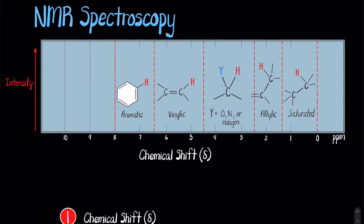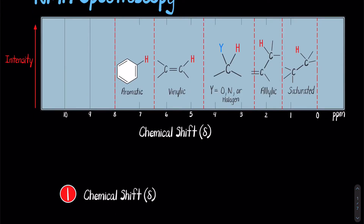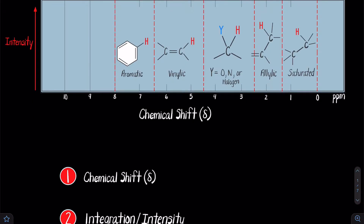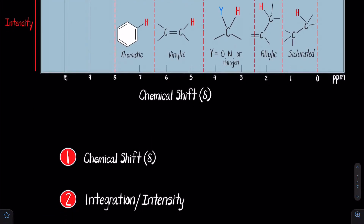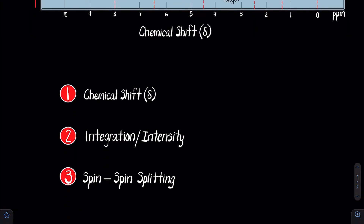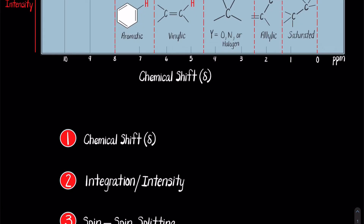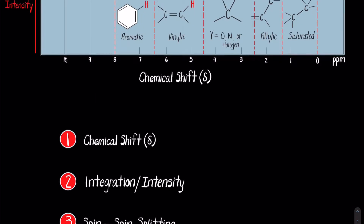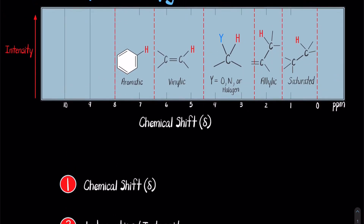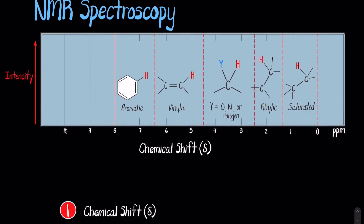We'll cover the three basic applications of NMR spectroscopy — the three things that you need to look for when looking at a spectrum — those being chemical shift, integration/intensity, and spin-spin splitting. I'm going to get into each of these in this video, and I'm going to walk you through how, as a first or second year student in organic chemistry, how to utilize this technique.